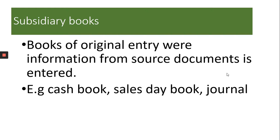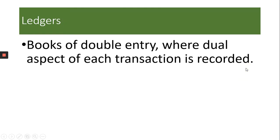Then there are the subsidiary books. We use the source documents to record in the books of original entry, which are the subsidiary books. These are the books of original entry where information from source documents is entered. For example, the cash book, the sales day book, and the sales journal are subsidiary books.